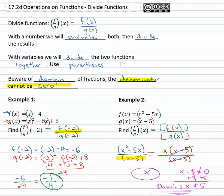The denominator cannot be zero when we're dividing fractions. Other than that, really simple and straightforward: dividing functions with a number, evaluate both and then divide the results; with variables, divide the functions together and simplify.